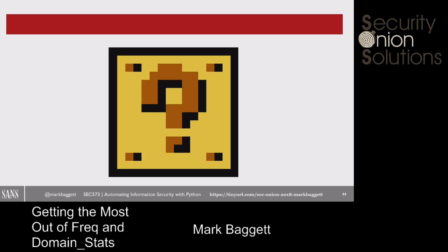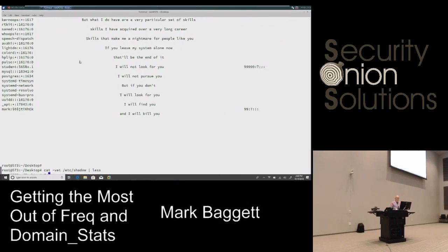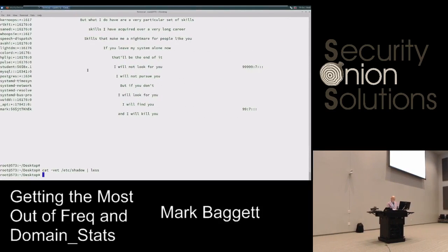I heard something about CloudFront domains and random virtual host stuff at the beginning — could this help to identify those? What happens with domains that are showing up as random that you don't want to see? Perhaps they're static domains. Let me show you.